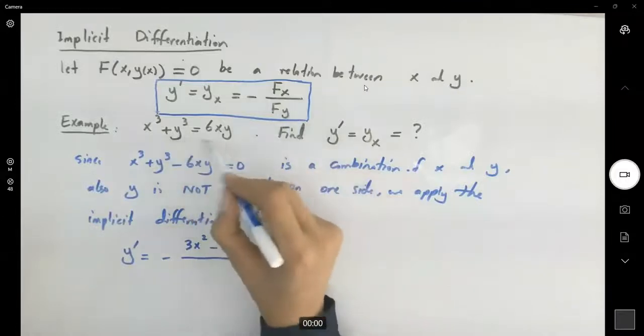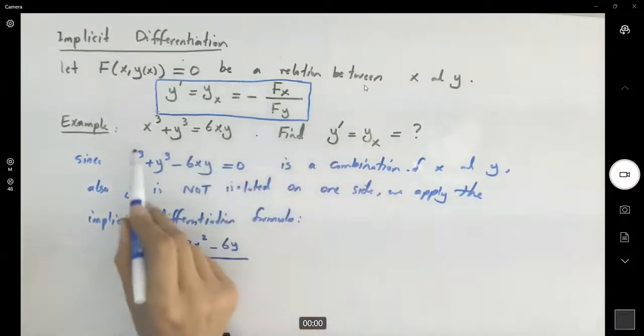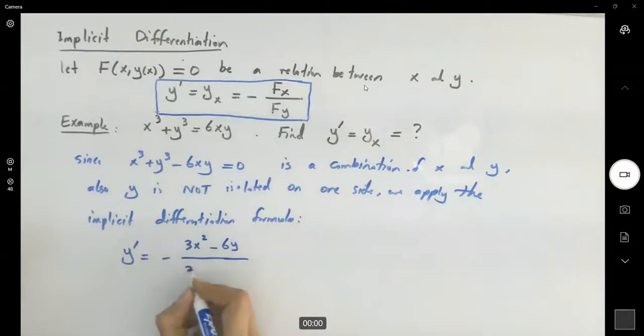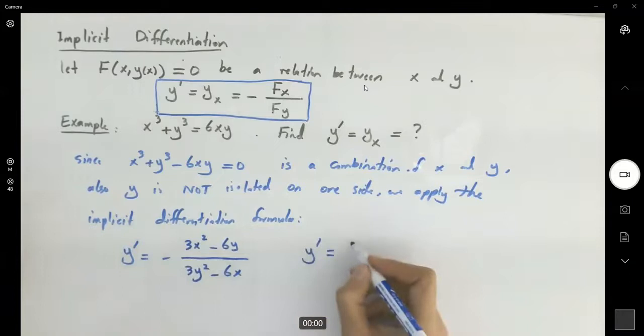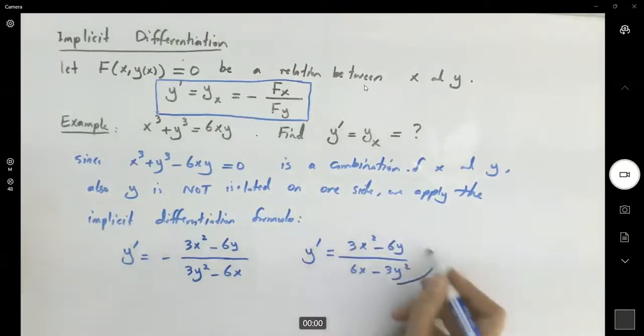Taking the partial derivative with respect to y, x is a constant, so you're left with 3y² - 6x. We can distribute this negative sign, and y' becomes (3x² - 6y)/(6x - 3y²). This is your final answer.